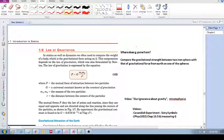So the first one is where does G come from? Little g, as in F equals mg. Where does that value come from? The second one is compare the gravitational strength between two iron spheres, that should be an S there.